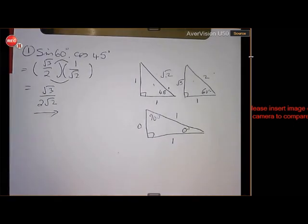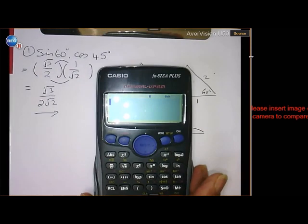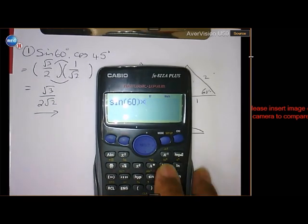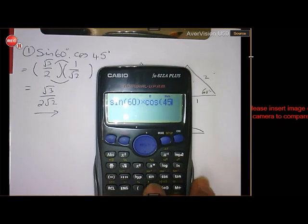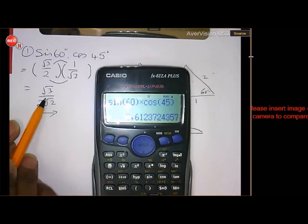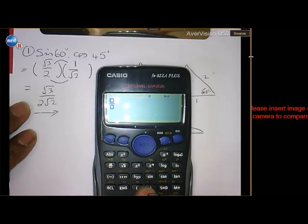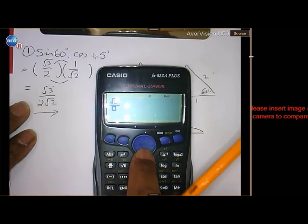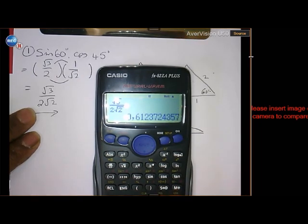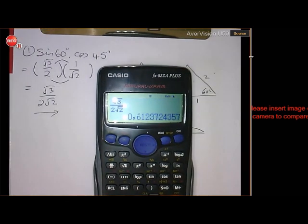Let's see on the calculator: sine of 60, close bracket, times cos of 45, close bracket, equals — and we get square root of 6 over 4, which in decimal is 0.61. Now let's check: if I use my fraction key and put in square root of 3 over 2 times square root of 2, that is also 0.61. So it doesn't matter whether the answers look different — they are equal to each other.